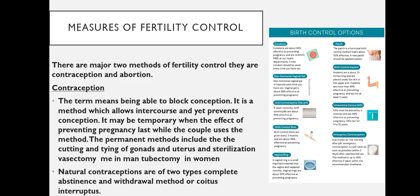Natural contraceptions are of two types: complete abstinence and withdrawal method or coitus interruptus. As we can see the birth control options here, there are various options including birth control implants, oral contraceptives or oral pills, vaginal rings, condoms, and intrauterine devices or IUDs.